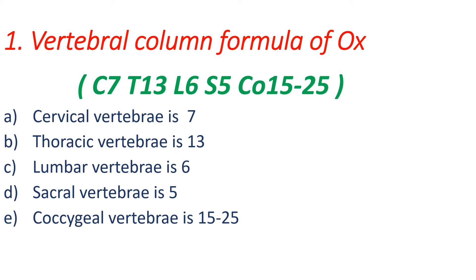The vertebral column is a column-like structure that is present towards the dorsal side of an animal's body, and it is formed by the articulation of various bones. This bony column-like structure on the animal's dorsal surface is known as the vertebral column, also called the spine. So if we ask the spine formula or the vertebral column formula, this is the same thing.